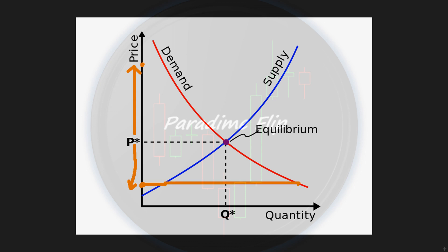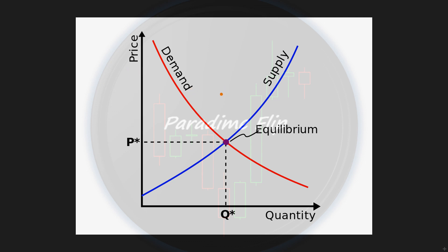Inversely the same is true. When price decreases, the quantity supplied is naturally less and the quantity demanded is naturally more — because at lower prices there will be an increase in demand since people like cheap products, and at lower prices suppliers will reduce because they do not want to sell at cheaper prices. We also have the area where the demand and supply curves intersect — this is the equilibrium price, or fair value, where supply equals demand.